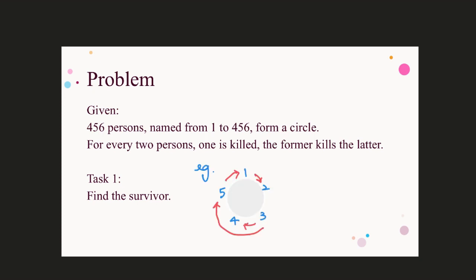Let me illustrate the rule of the game with an example of five persons standing in a circle. The game starts with the first pair, 1 and 2. 1 is the former and 2 is the latter, so 1 kills 2. 2 is crossed. Similarly, 3 and 4 — 4 is crossed. Then 5 and 1 — 1 is crossed. Now we have two numbers left, 3 and 5. 5 is the latter, so 5 is crossed. The number 3 is left — the person with number 3 is the survivor.